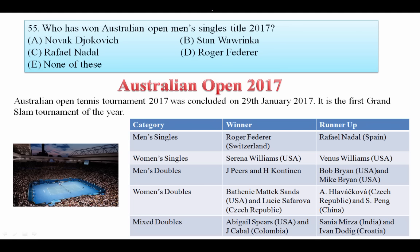Who has won the Australian Open Men's title 2017? You need to remember three things: in the men's category, Roger Federer from Switzerland won the title, defeating Rafael Nadal from Spain. In the women's category, Serena Williams from the US defeated Venus Williams, her elder sister. Sania Mirza from India was the runner-up in the mixed doubles, defeated in the finals by the US and Colombian team.